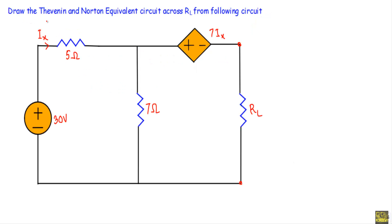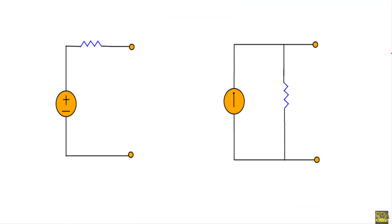This is our circuit. We have to draw the Thevenin and Norton equivalent circuit across the load resistor RL — this is terminal A and this is terminal B. When we convert the circuit into a Thevenin equivalent, we convert the entire network to a single resistor Rth in series with a voltage source Vth between A and B terminals. For a Norton equivalent, we get a current source In in parallel with Norton resistance Rn between A and B terminals.